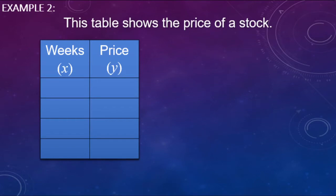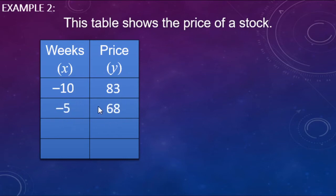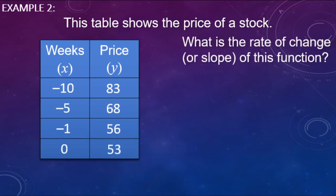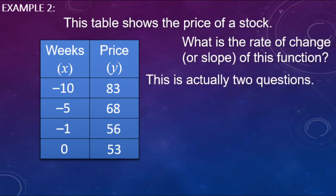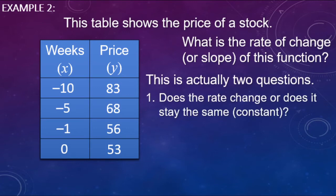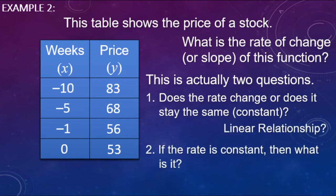Now we're going to look at the price of a stock. Ten weeks ago the price was $83. Five weeks ago it was down to $68. Last week the price was $56, and this week — week zero — it is at $53. We're going to find the rate of change or slope for this function. There are two questions: one, does the rate stay the same — is it constant? And two, if it does stay the same, what is it?